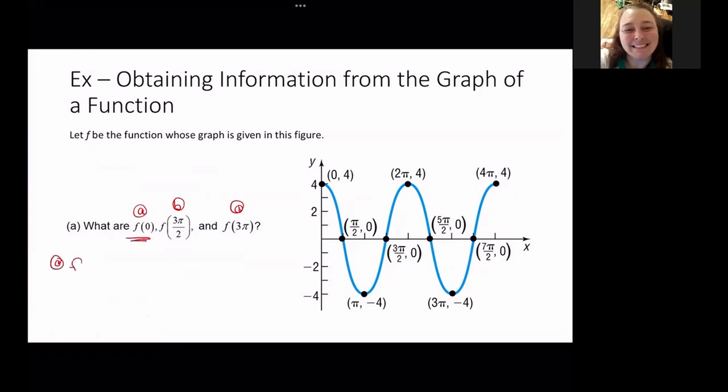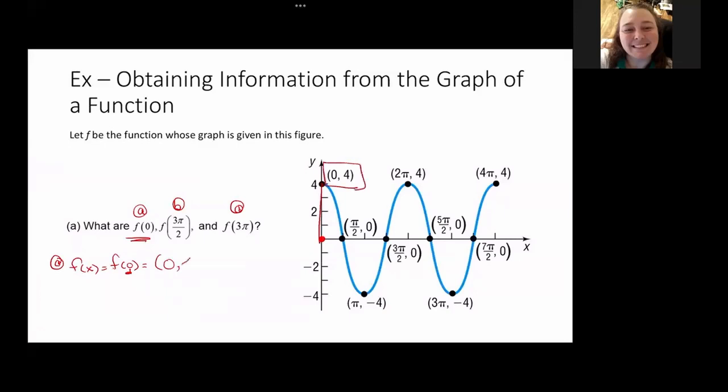What are the values of f of 0? For baby A, f of x equals f of 0, which means my point is at 0, right? Because 0 is x. If I look on my graph, what's the 0 here? It's this point right here, 0, 4. We can read that right off the graph.